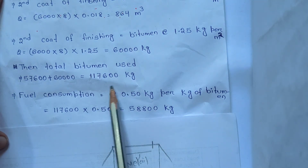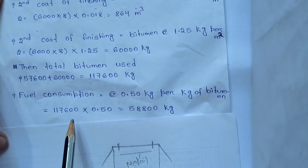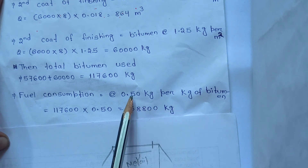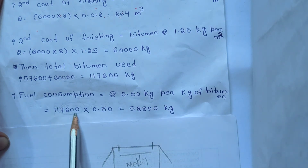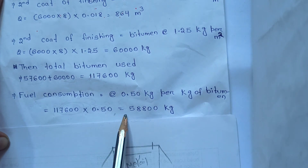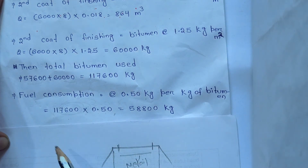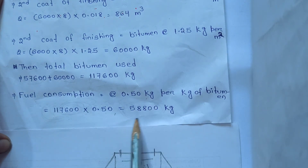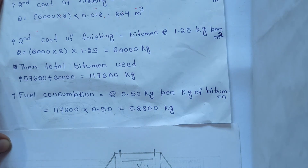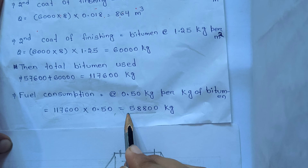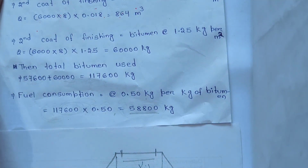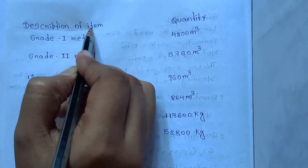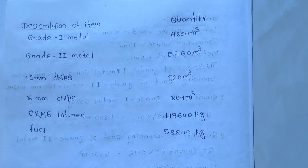Total bitumen is 0.50 kg multiplied by the fuel consumption of 8800 kg. We are going to prepare a table of description of items and quantities, and ask the final question.